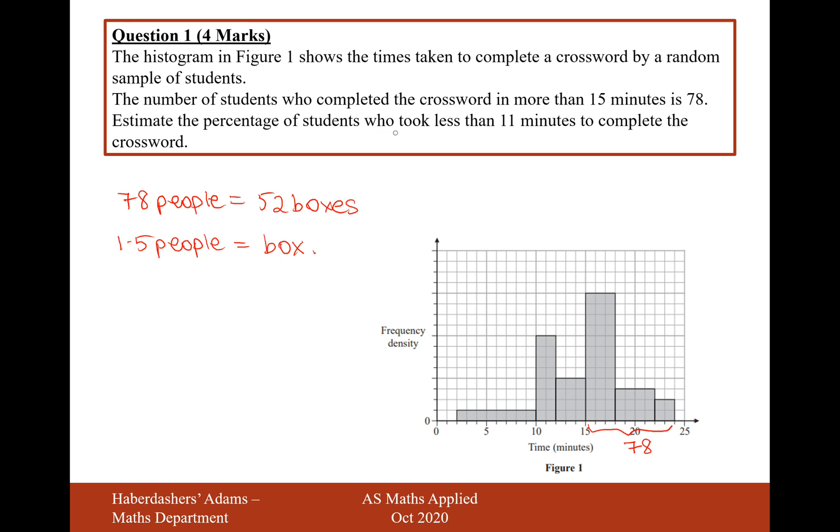Okay, so now what we want to work out is the number of students who scored 11 minutes or less. So that would require us to divide this box in half and count: 1, 2, 3... up to 16. So that's going to be 16 boxes, which will correspond to 24 people, times it by 1.5, yeah, 24 people.